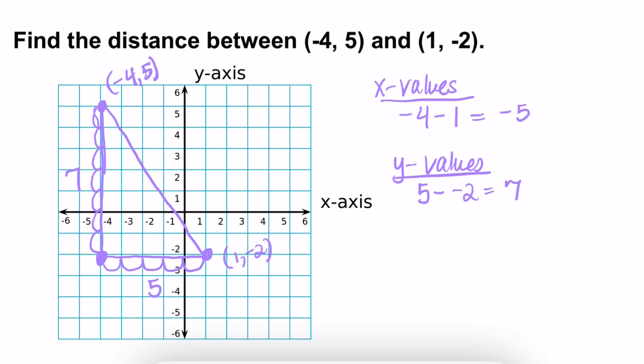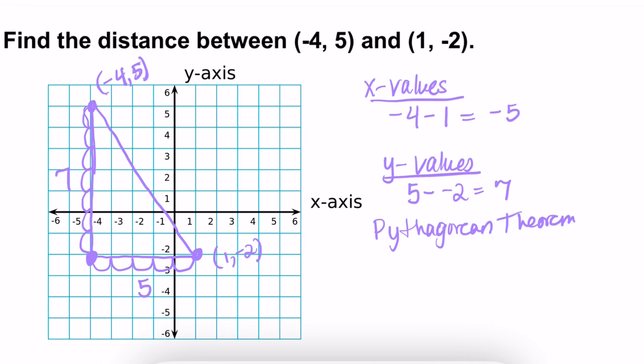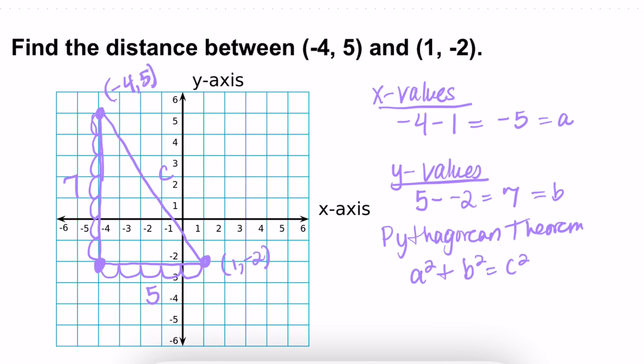So to find the distance between negative 4, 5 and 1, negative 2, you would do the Pythagorean theorem. So Pythagorean theorem, which is a squared plus b squared is equal to c squared. So you can make this value a, you can make this one b, and the distance from the two points make that c. So we'll say 5 or negative 5 squared plus 7 squared is equal to c squared.